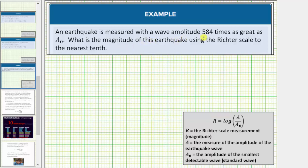An earthquake is measured with a wave amplitude 584 times as great as A₀. What is the magnitude of this earthquake using the Richter scale to the nearest tenth?